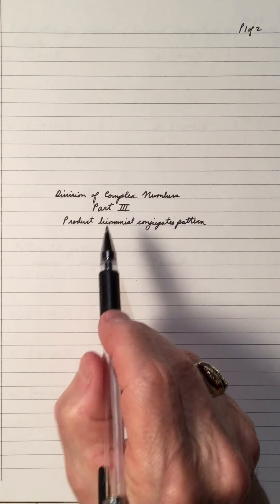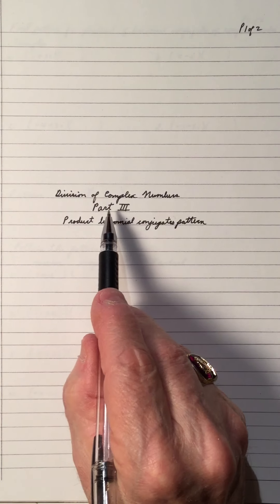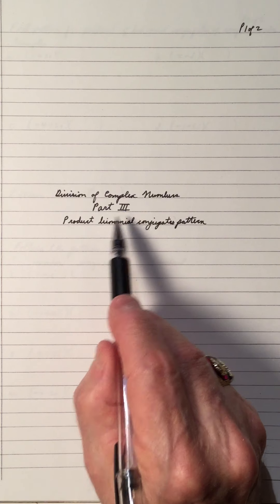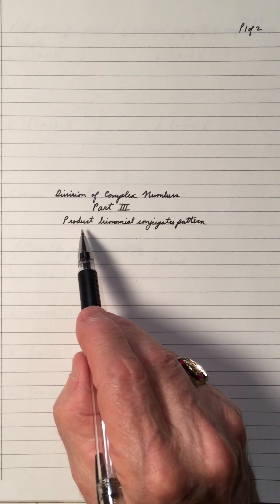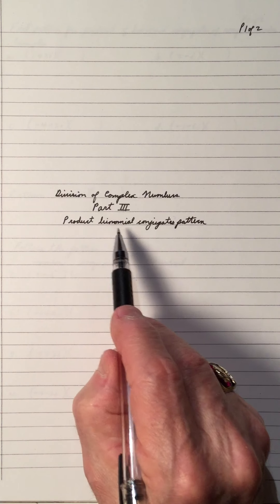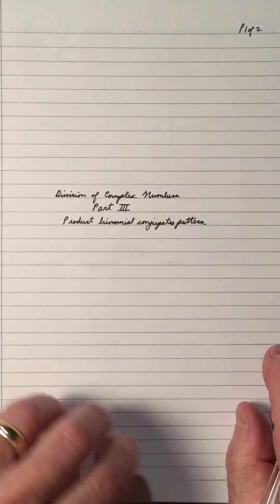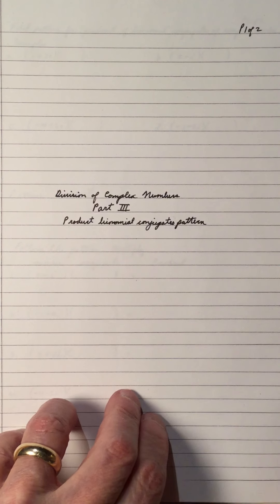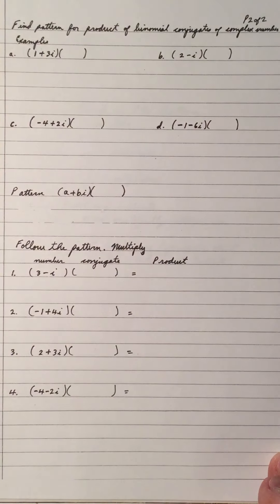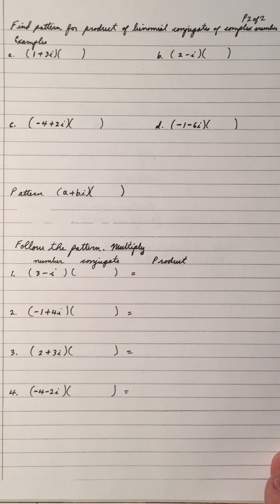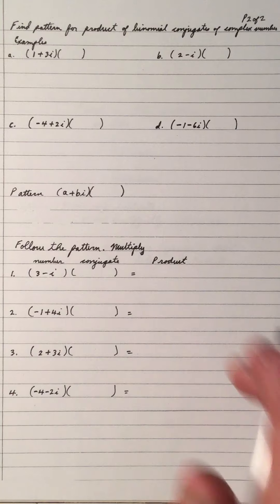Welcome to my video on division of complex numbers, part 3: the product of a binomial conjugate patterns. We're going to find a pattern when we multiply two conjugates which are binomials.